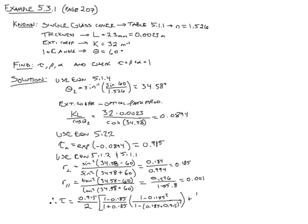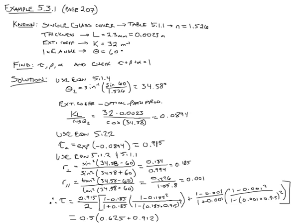Plus, now we have to do the parallel component. 1 minus 0.001 divided by 1 minus 0.001 times 0.915 quantity squared. This gives us 0.5 times 0.625 plus 0.912, which equals 0.768.